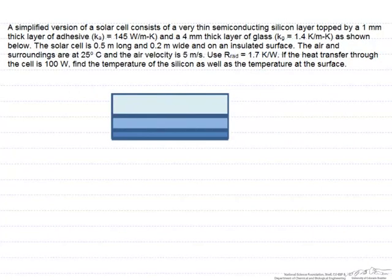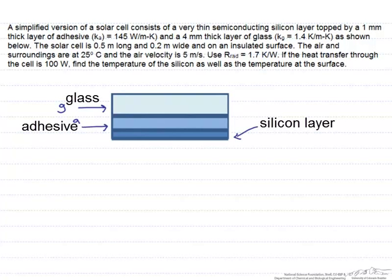Here we have a simplified version of a solar cell, and it consists of a very thin silicon layer, then one millimeter thick of adhesive, and glass. The length of this solar cell is 0.5 meters, its width is 0.2 meters.